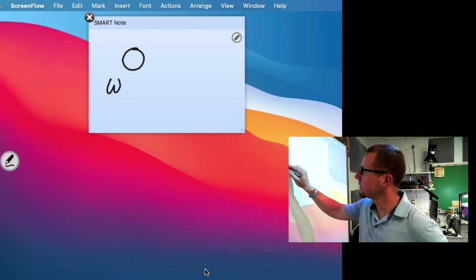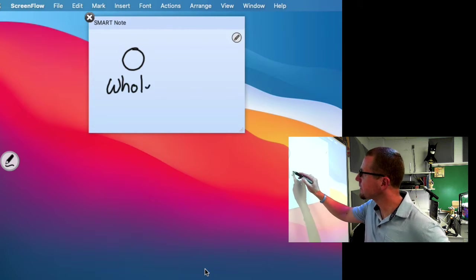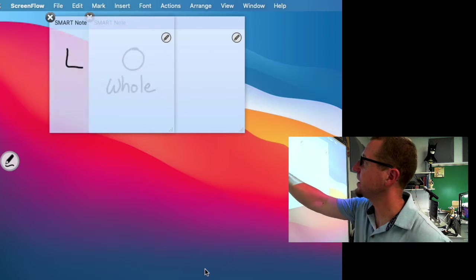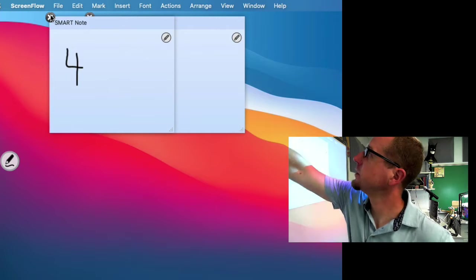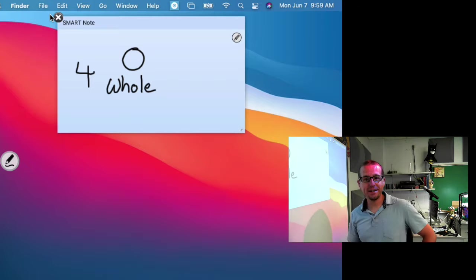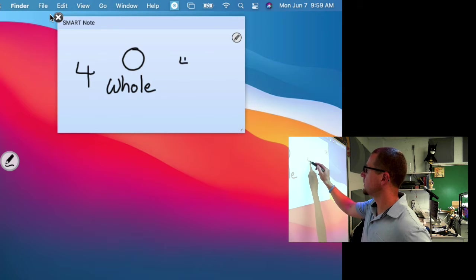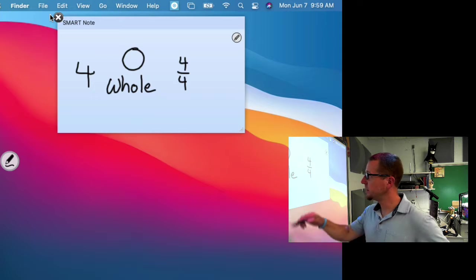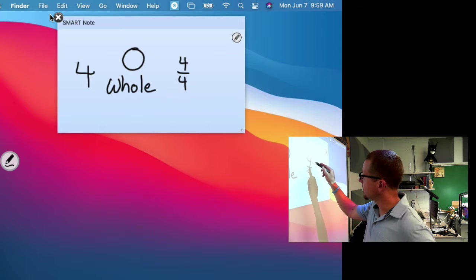That's a whole note. That's its name. And since everything we're doing is in 4, I'll put that over here. Since everything we're doing is in 4, then a whole note takes up one whole measure, as in 4 out of 4 beats. So a whole note is called a whole note and is worth 4 beats.